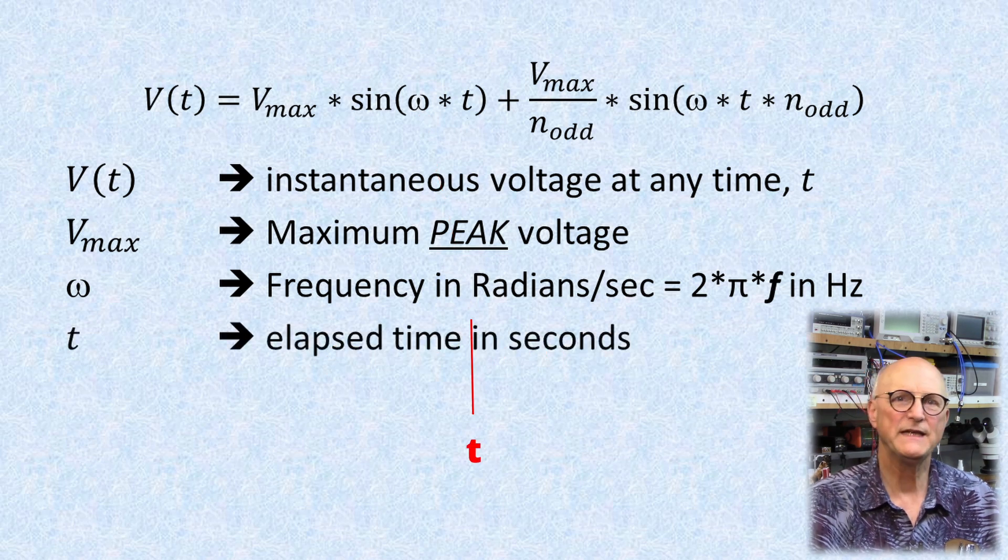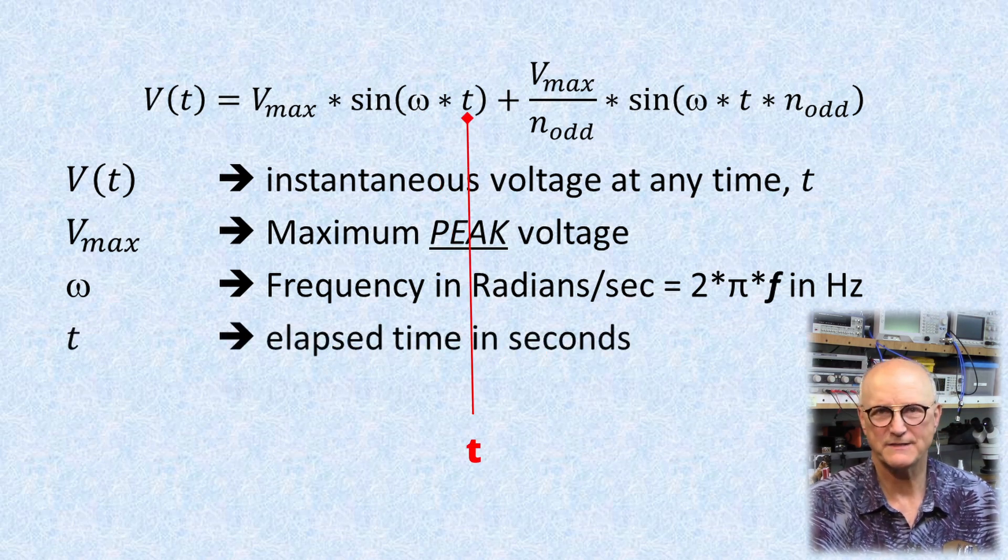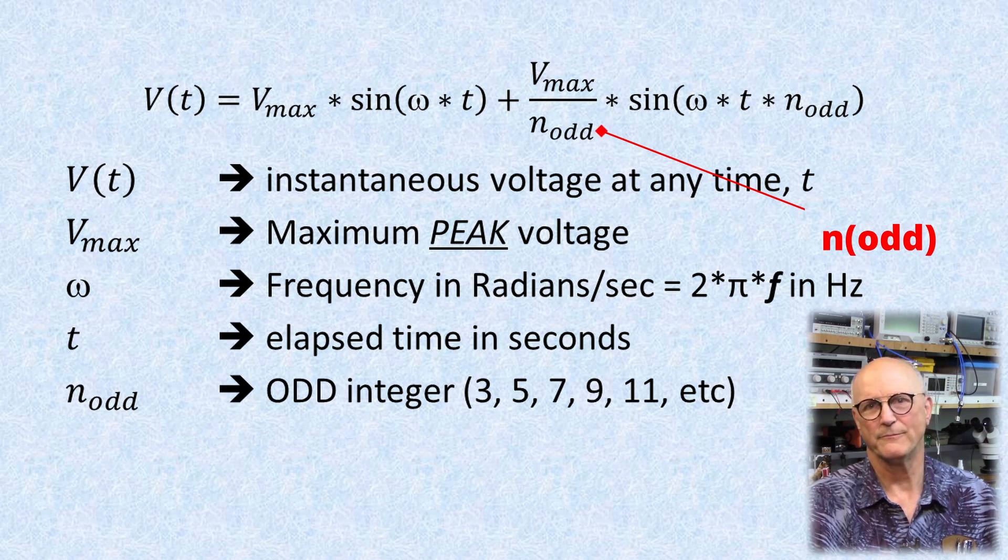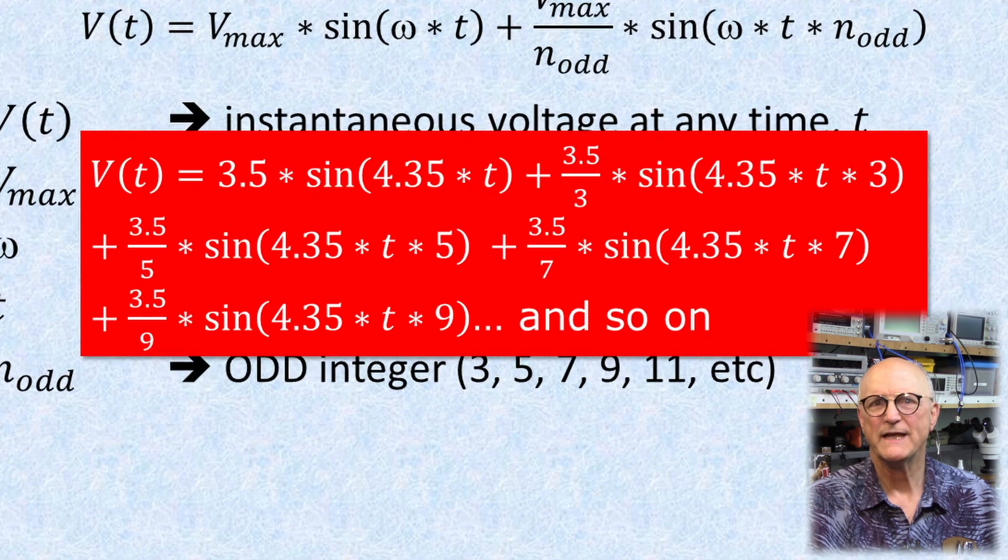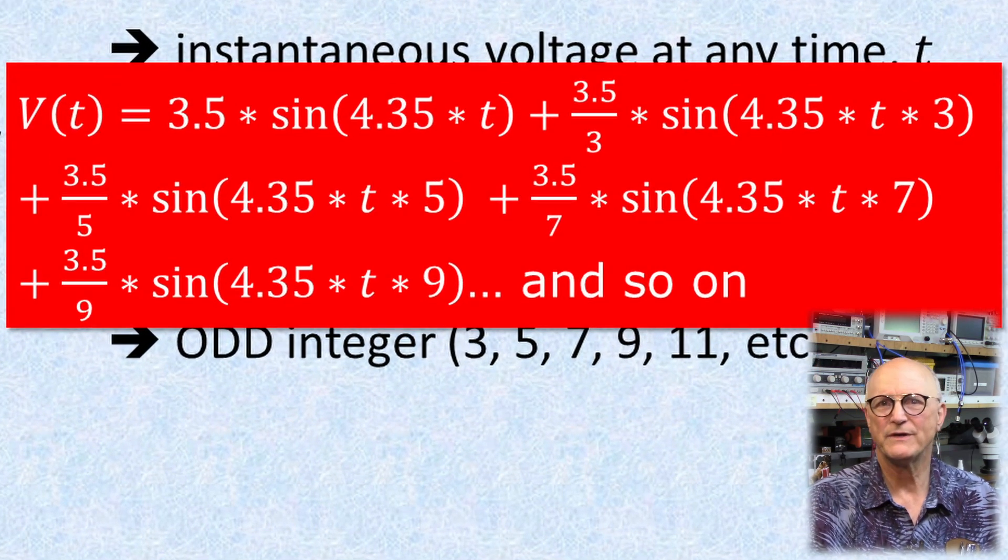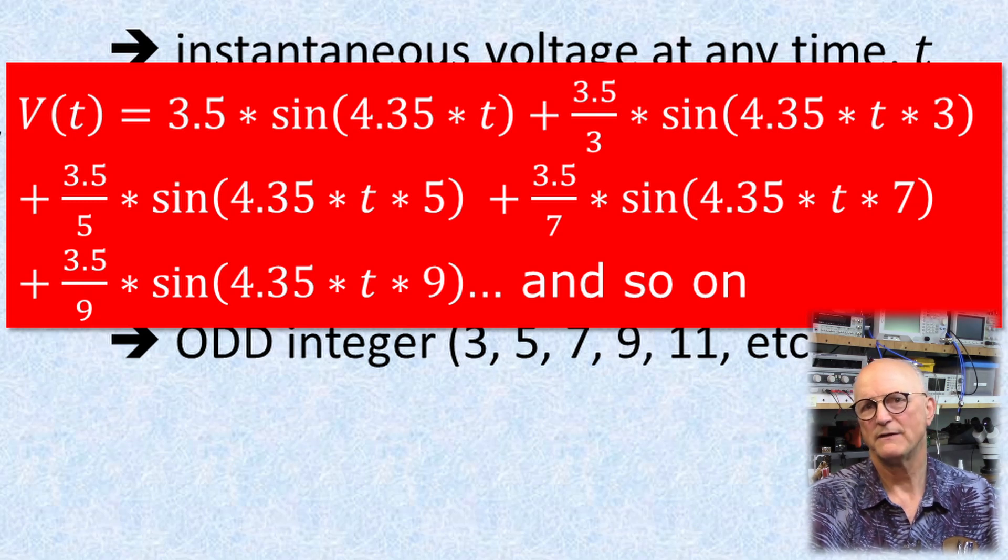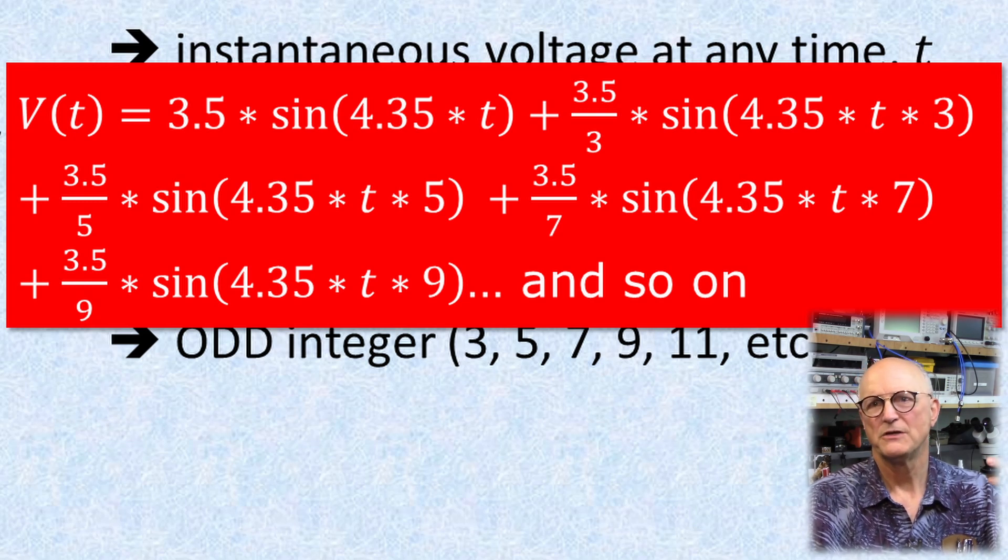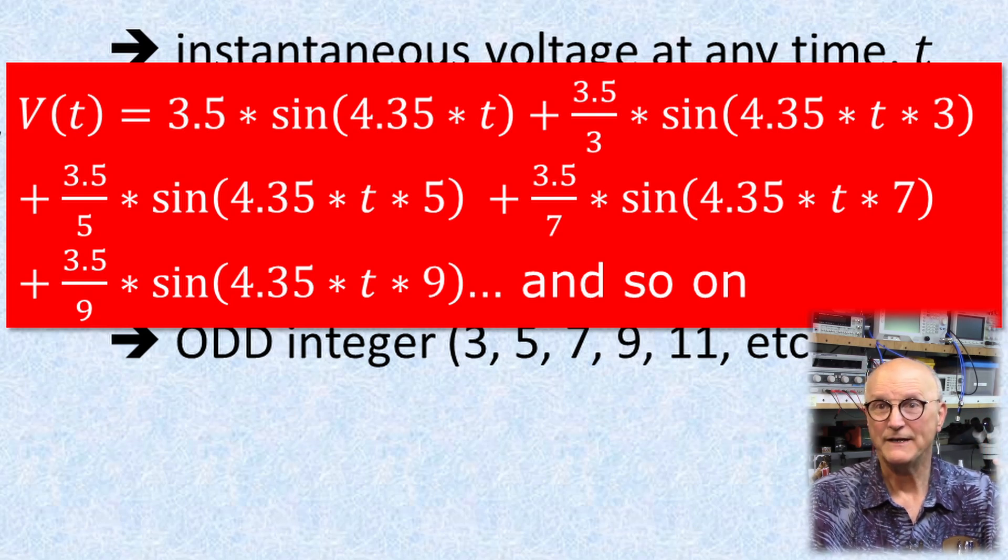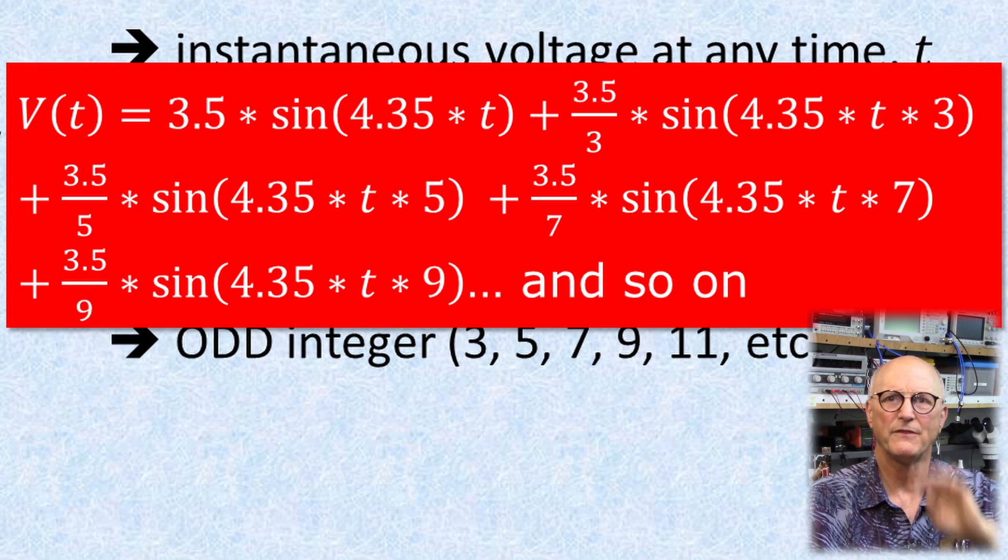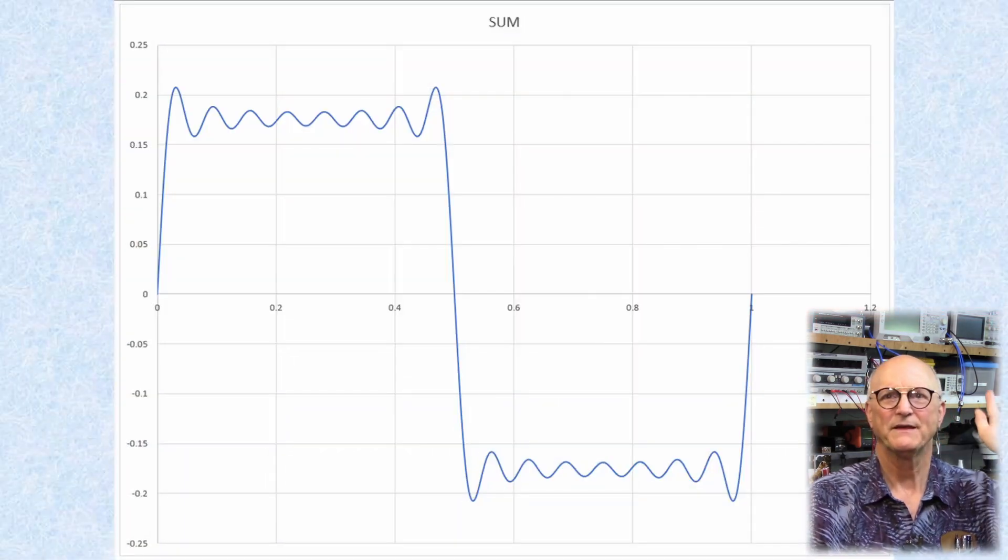Then we have the n_odd term. This means that you create multiple terms, each one with ever-increasing odd numbers: three, five, seven, nine, and so on. So if you go up to n equals nine, then there would be a total of four additional terms beyond the fundamental.